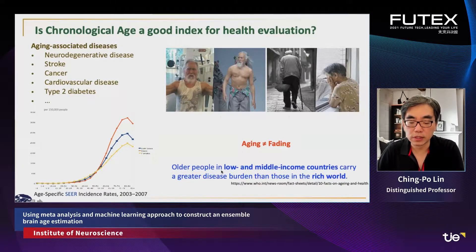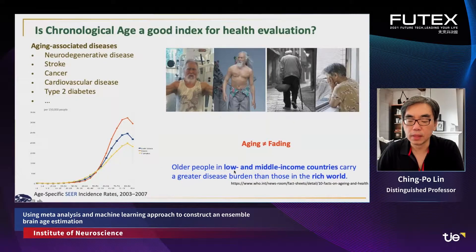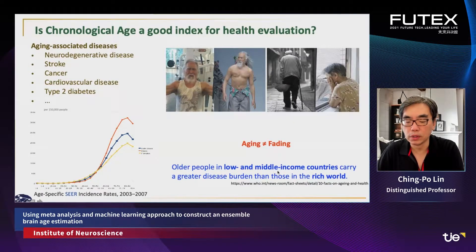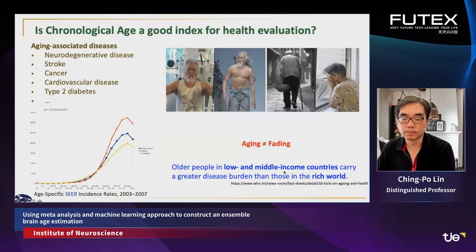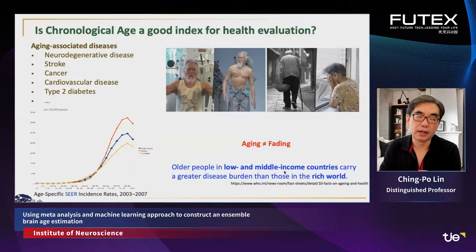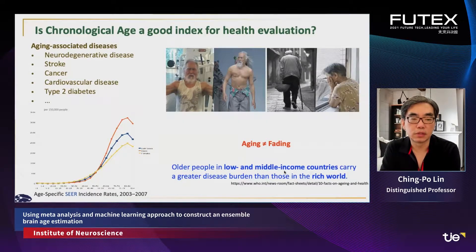So the problem is: how can we identify those subjects from all elderly? Another report also noticed that such situations may be mediated by whether the country has high or low income. So the question is whether we can provide a good marker for such kinds of brain age.